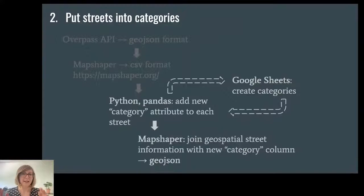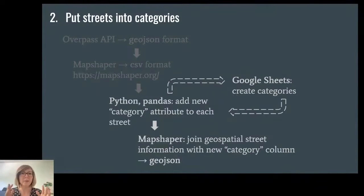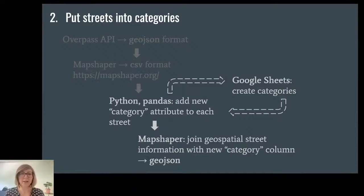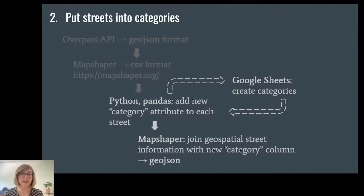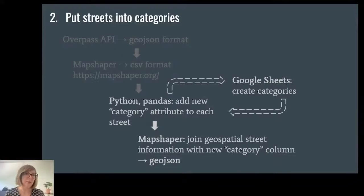I added the category information to the list of street names in Python, then joined that list with the huge original dataset from Overpass — again using MapShaper. This joining was necessary so I would end up with one file containing all the street names, the geographical information, and my new category information. I then exported the resulting file from MapShaper as a GeoJSON, and that was the basis for the map I would make in Mapbox.